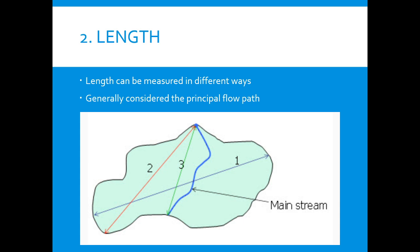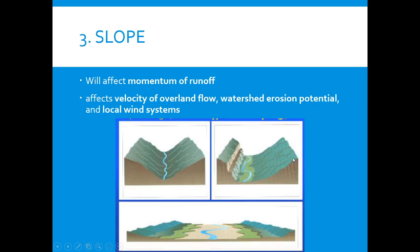Length can be measured in different ways. Typically it's considered the principal flow path. If this was our watershed, we could measure the total length — that's number one. We could also do number two, which is from here to the farthest point away from where the water enters, or from the point of water entering to the point of water exiting. These are all ways to measure the length of a watershed, where this is the main stream running through it.